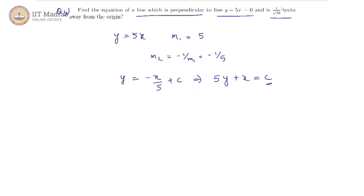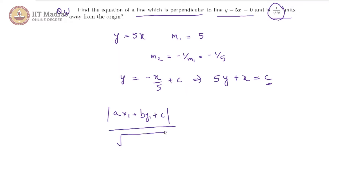For that, we use the next piece of information given to us: the distance from the origin. We use the distance from a point formula: |Ax1 + By1 + c| divided by the square root of A squared plus B squared, where x1, y1 is the point. In our case x1, y1 is (0, 0), so we get |−c| divided by root of A squared plus B squared.